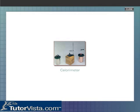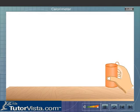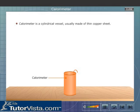Calorimeter. Calorimeter is a cylindrical vessel usually made of thin copper sheet. It is used to measure the heat energy of its contents.